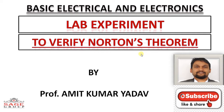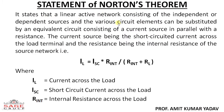Let us understand what Norton's theorem is. It states that a linear active network consisting of independent or dependent sources and various circuit elements can be substituted by an equivalent circuit consisting of a current source in parallel with a resistor. The current source is the short-circuit current across the load terminal, and the resistance is the internal resistance of the source network. The load current IL equals short-circuit current ISC times internal resistance R_int, divided by R_int plus load resistance RL.